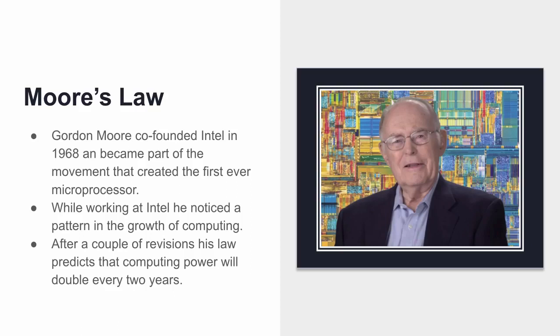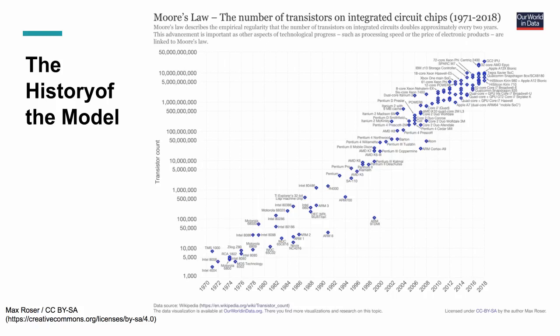While working at Intel, Moore noticed a repeating pattern in the growth of computing and formulated a law around it. After a second revision, he predicted that computing power will double every two years. Specifically, he forecasted that the number of transistors on integrated circuits would double every two years, which would exponentially increase the processing power of machines.